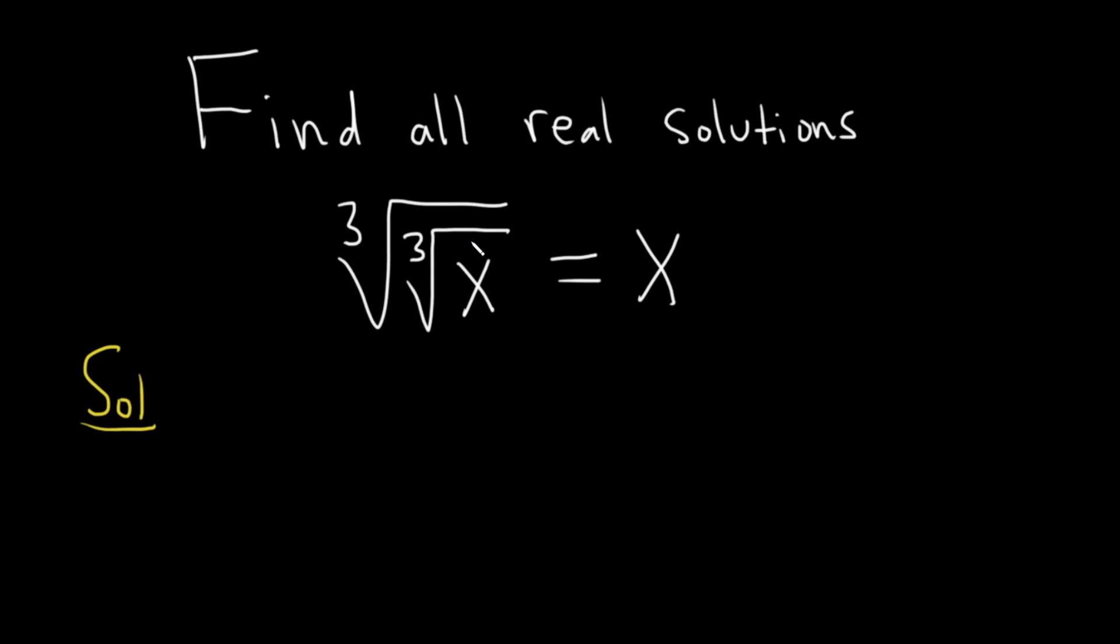We'll start by just cubing both sides of this equation. That will get rid of one of the cube roots. I'm going to go ahead and write it again down here. So we have the cube root of the cube root of x and all of that is equal to x. Step one is to cube both sides to get rid of that outside cube root. And we're left with simply the inner cube root of x equals x cubed.